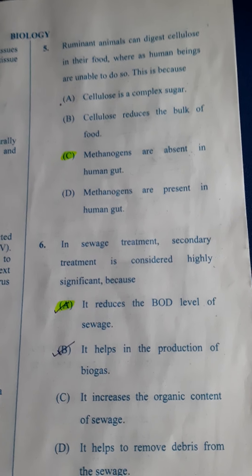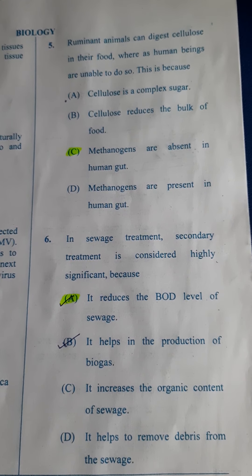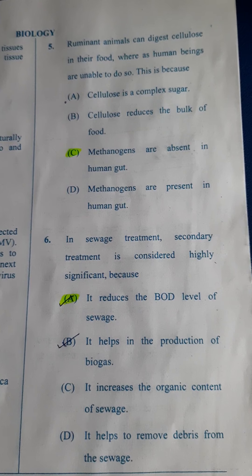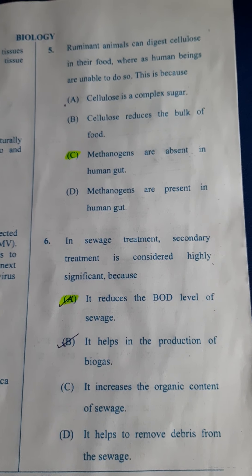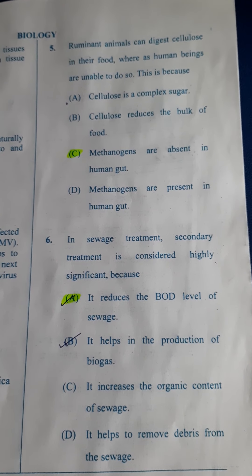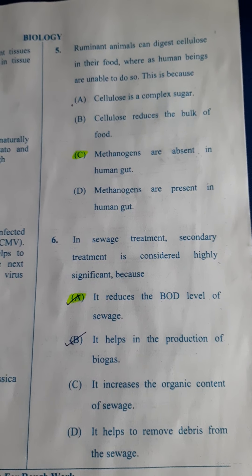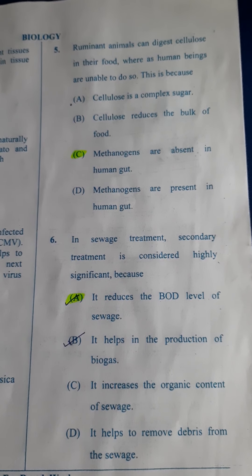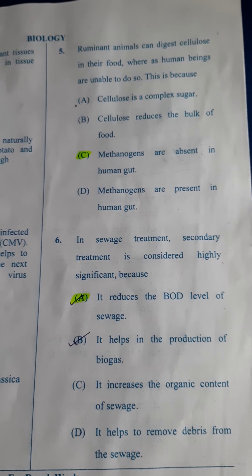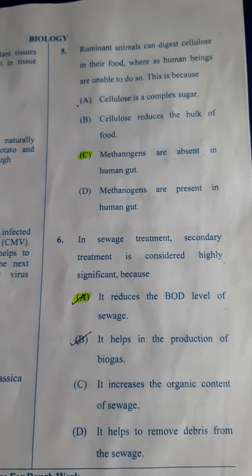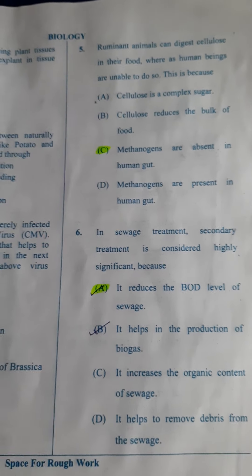Next: Ruminant animals can digest cellulose in their food whereas human beings are unable to do so. This is because human beings do not have methanogens in their gut. So it becomes difficult for digestion, and that is the reason the answer here is C — methanogens are absent in the human gut.